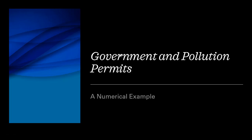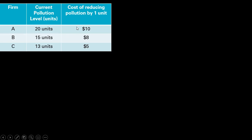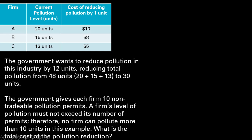In this video, we're going to look at government and pollution permits, doing a few numerical examples. We have a three-firm industry, with each firm polluting a certain amount, and the cost of reducing pollution by one unit. For some firms, it's more costly to reduce pollution than others. The government wants to reduce pollution in this industry by 12 units, reducing total pollution from 48 units — 20 plus 15 plus 13 — down to just 30 units.